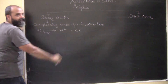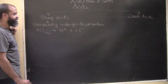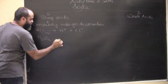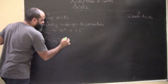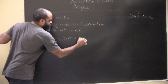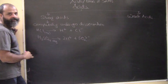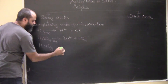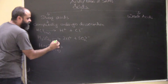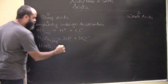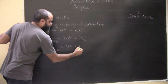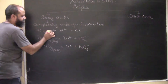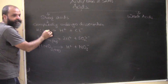If we take sulfuric acid (H₂SO₄), it completely dissociates to form 2H⁺ and SO₄²⁻ ions. If we take HNO₃, that is nitric acid - these are all mineral acids and they are all strong acids - we get H⁺ plus NO₃⁻. These are complete dissociations.